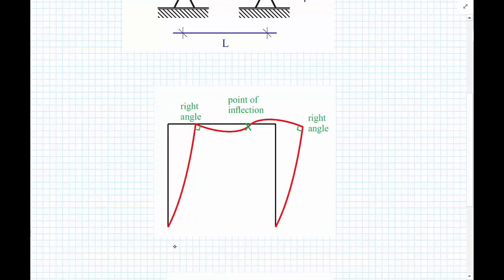They are free to rotate at the bases, so we'll just get one-way bending in the columns. But we'll get this kind of double bending in the beam and a point of inflection somewhere across the top.